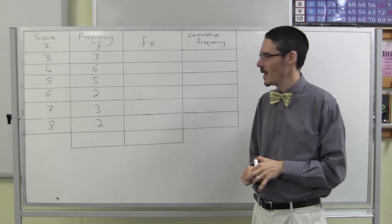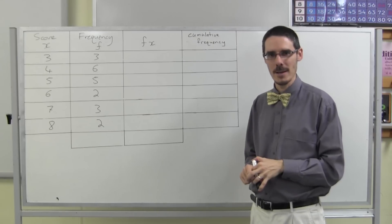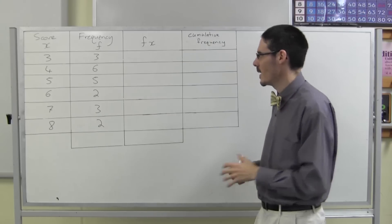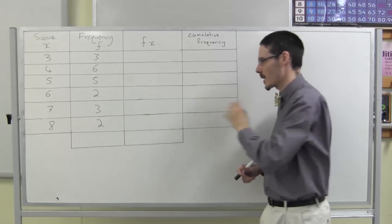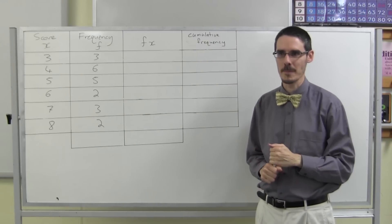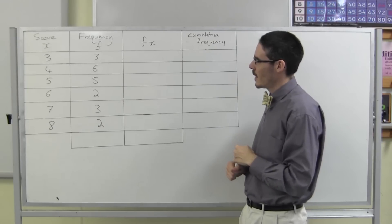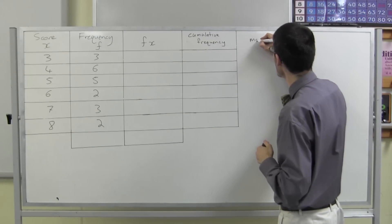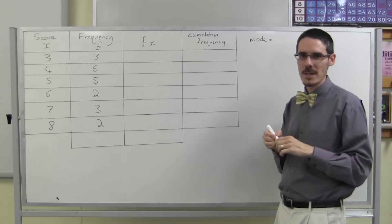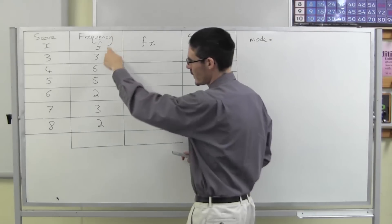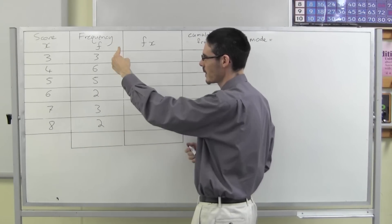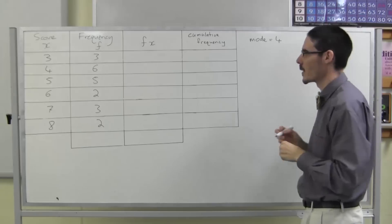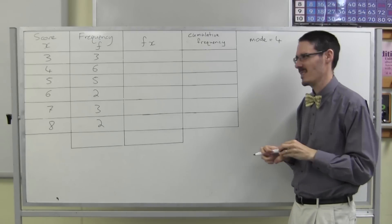Here's another example — a frequency table where we have to calculate the mean, the median, and the mode. I've already drawn out a couple of extra columns because I know I'm going to need them. Let's do the mode first because it's the easiest. The mode is the most common score — which of these has the highest frequency? The mode is 4.